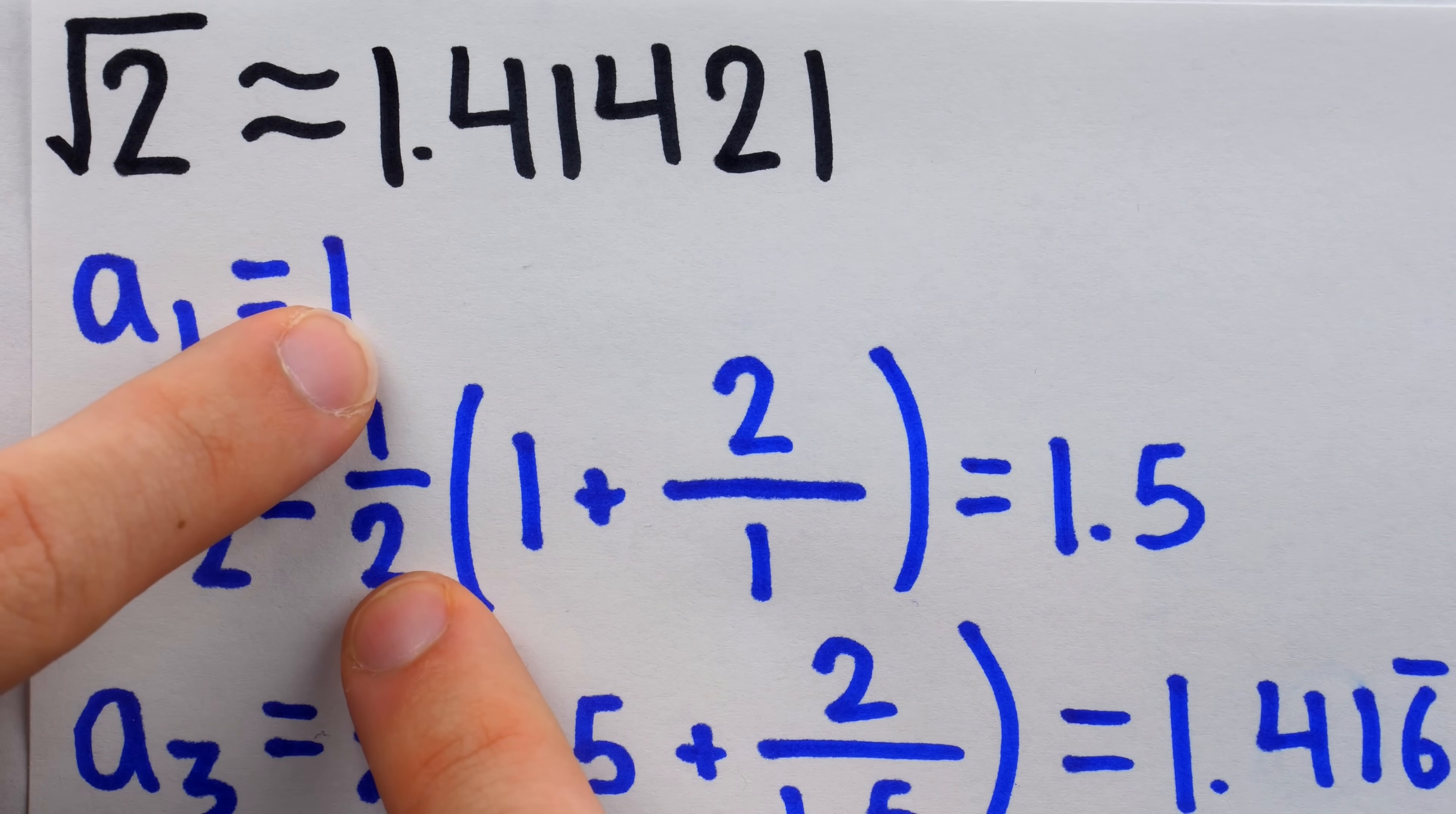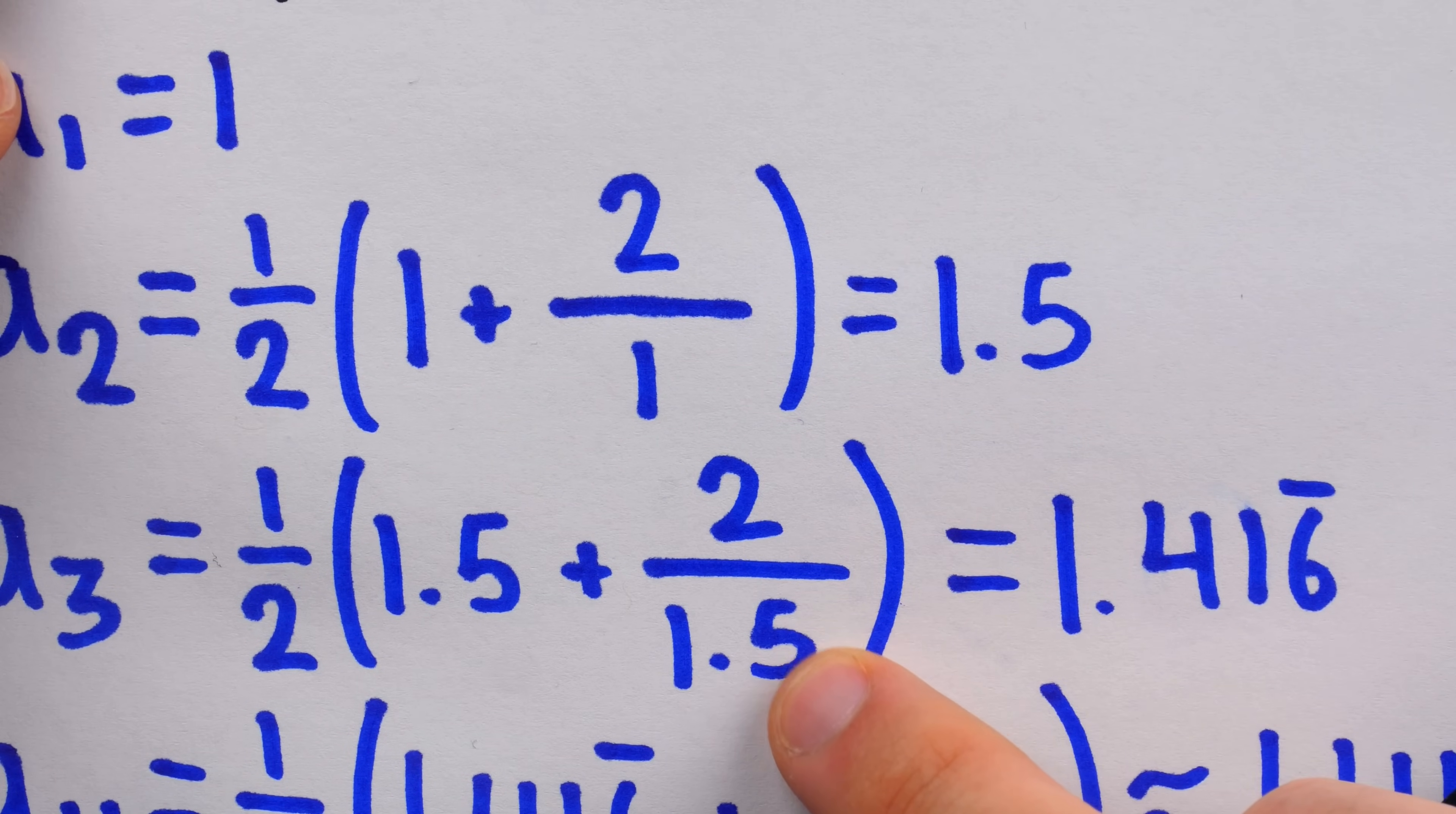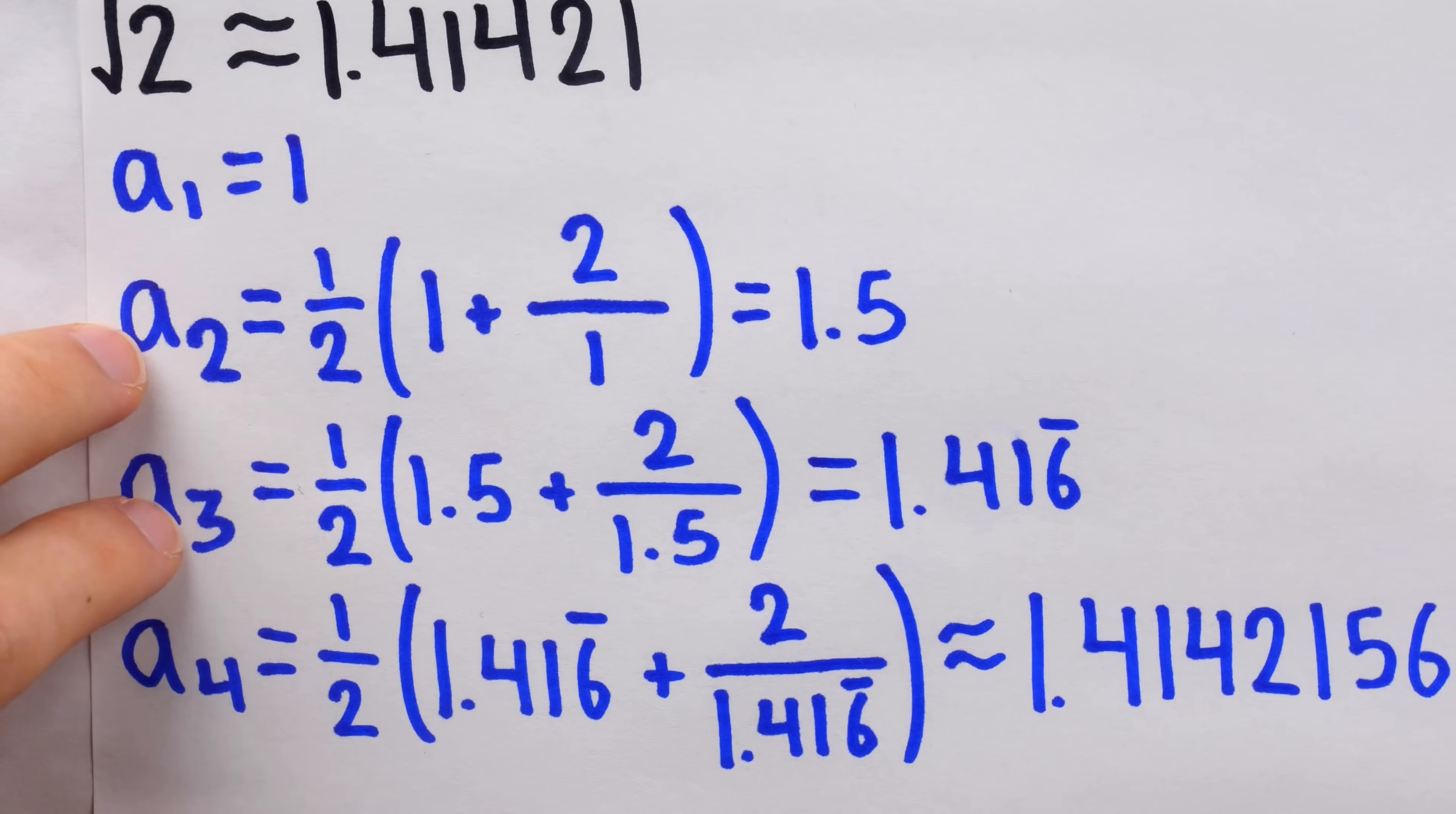Add them together, divide by 2. Naturally, that gets us a better approximation. This one, it turns out, is an overestimate. But then, 2 over 1.5 is an underestimate. So, you've got an overestimate, an underestimate, find their average, you get a better approximation. That's just an intuitive justification for why this works.